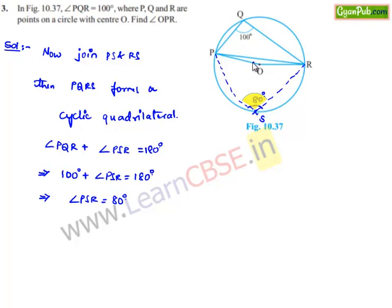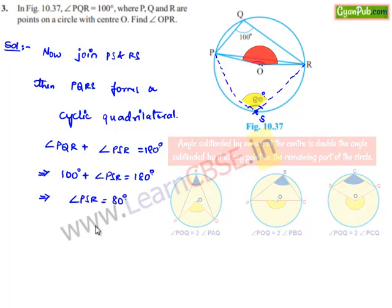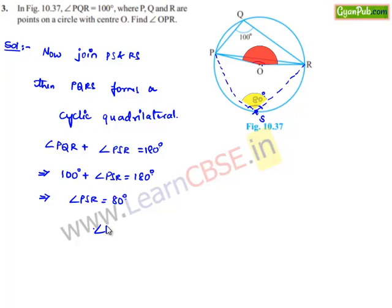Now let us find the angle at center O. We know that the angle subtended by the arc at the center is 2 times the angle subtended by the arc at any point on the circle. Therefore angle POR equals 2 times angle PSR, which is 2 times 80 degrees, equal to 160 degrees.